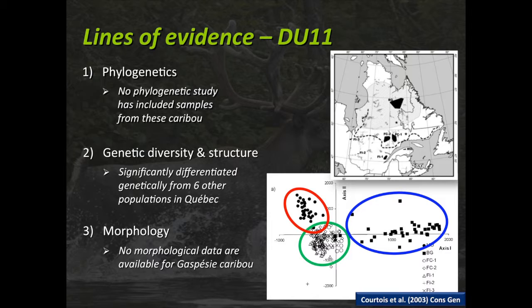The first line of evidence: we don't know a lot about the phylogenetics of that population. There's no study that includes samples from these animals about genetic diversity and structure. However, the Gaspésie caribou population appears significantly differentiated from a genetic point of view from other populations in Quebec, in a study carried out by Rayon Courtois and his team. The mountain caribou is genetically distinct from migratory caribou and all forest-dwelling caribou populations investigated.